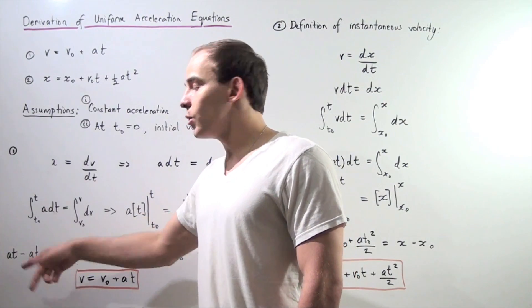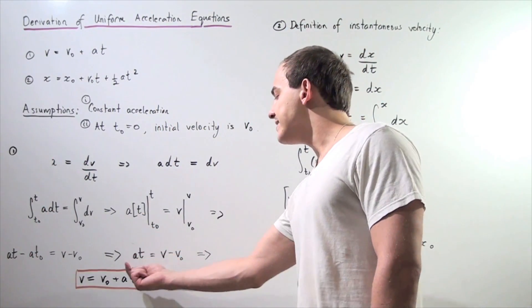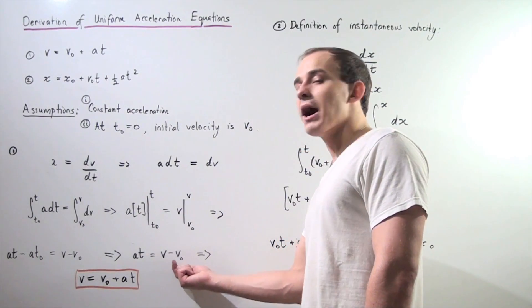So A times zero is simply zero. This term cancels out and we get A times t equals v minus v-naught.